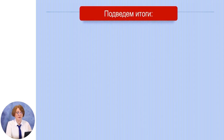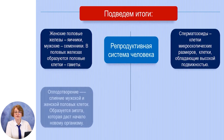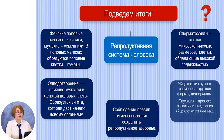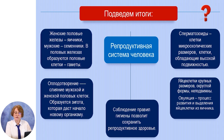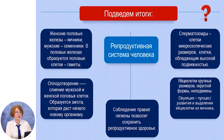Подведём итоги нашего урока. Мы сегодня говорили о репродуктивной системе человека и узнали, что женские половые железы – это яичники, мужские – семенники. В половых железах образуются половые клетки или гаметы. Сперматозоиды – это клетки микроскопических размеров, обладающие высокой подвижностью, это мужские гаметы. Яйцеклетки крупных размеров, округлой формы и неподвижны – это женские гаметы. Овуляция – это процесс развития и выделения яйцеклетки из яичника. Оплодотворение – это слияние мужской и женской половых клеток, при этом образуется зигота, которая даёт начало новому организму.